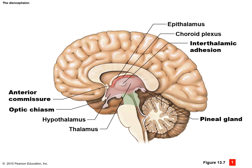Here we can see the diencephalon. We can see where the epithalamus is going to be at the very top as it extends back. In the posterior aspect of the epithalamus would be the pineal gland that we can see in the very back of the epithalamus and the back of the diencephalon.